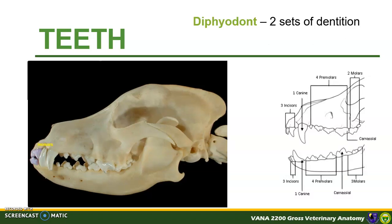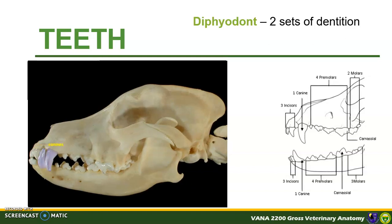Incisors are teeth embedded in the incisive bone and mandible. They are composed of the central incisor, middle incisor, and lateral incisor, also known as nippers. The canine teeth of dog are robust, long, pointed, and slightly curved. They are the longest teeth in dogs, with roots nearly two times as long as their crown.